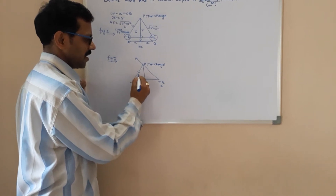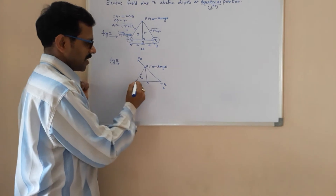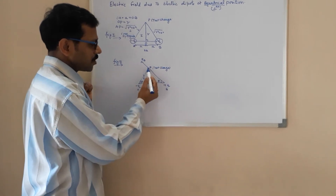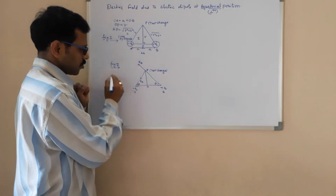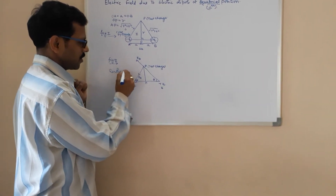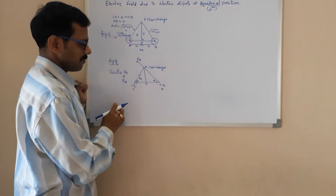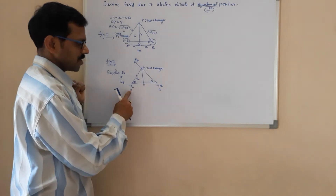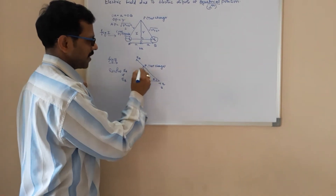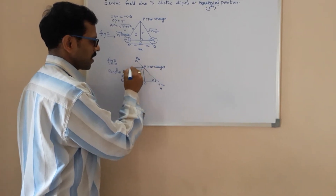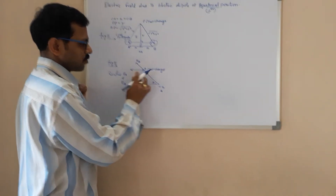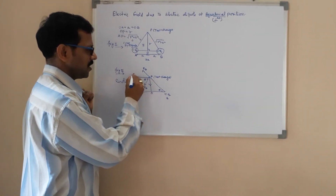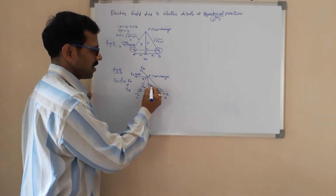I am writing this as Ea and this as E due to B. This is the angle theta and this is also the angle theta. After knowing these two directions, we resolve Ea and Eb into their components. Ea and Eb are the directions of the electric field due to the charge at B and due to the charge at A. When you resolve it, Ea will break into two components — one along the x-axis and another along the y-axis. Since this alternate interior angle is theta, this becomes Ea cos theta and this becomes Ea sin theta.